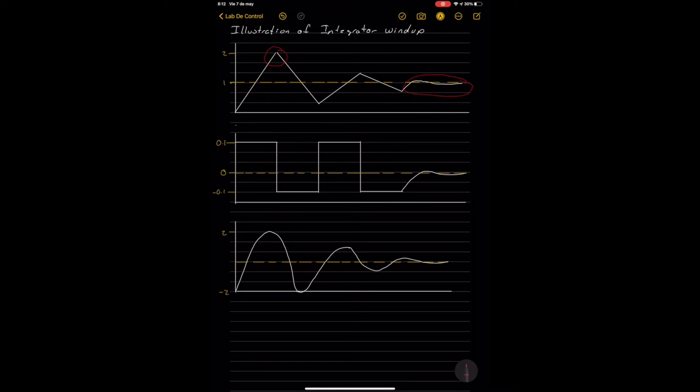Those peaks create a situation where the actuator quickly starts to saturate, in other words, the actuator reaches its maximum value. That also makes the integral part shoot up as we can see here. The integral part continues saturating the actuator as long as the error keeps going positive.